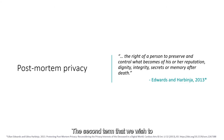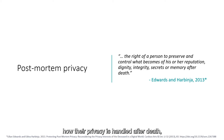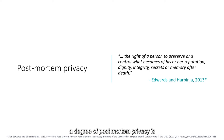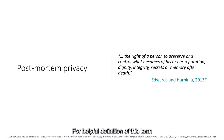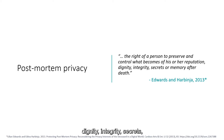The second term is postmortem privacy, which relates to the concept that personal privacy maintains value after the individual has died. An individual may have preferences during life about how their privacy is handled after death, and it is possible to breach the privacy of a deceased individual. We include the following definition from Edwards and Harbinia, who describe the right of postmortem privacy as the right of a person to preserve and control what becomes of his or her reputation, dignity, integrity, secrets, or memory after death.